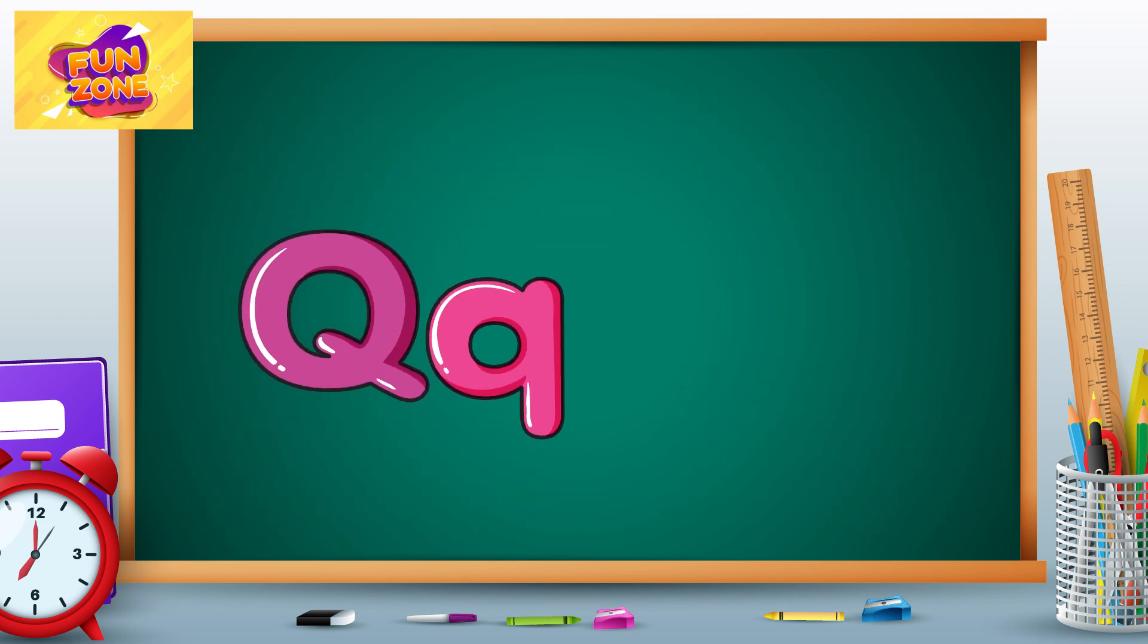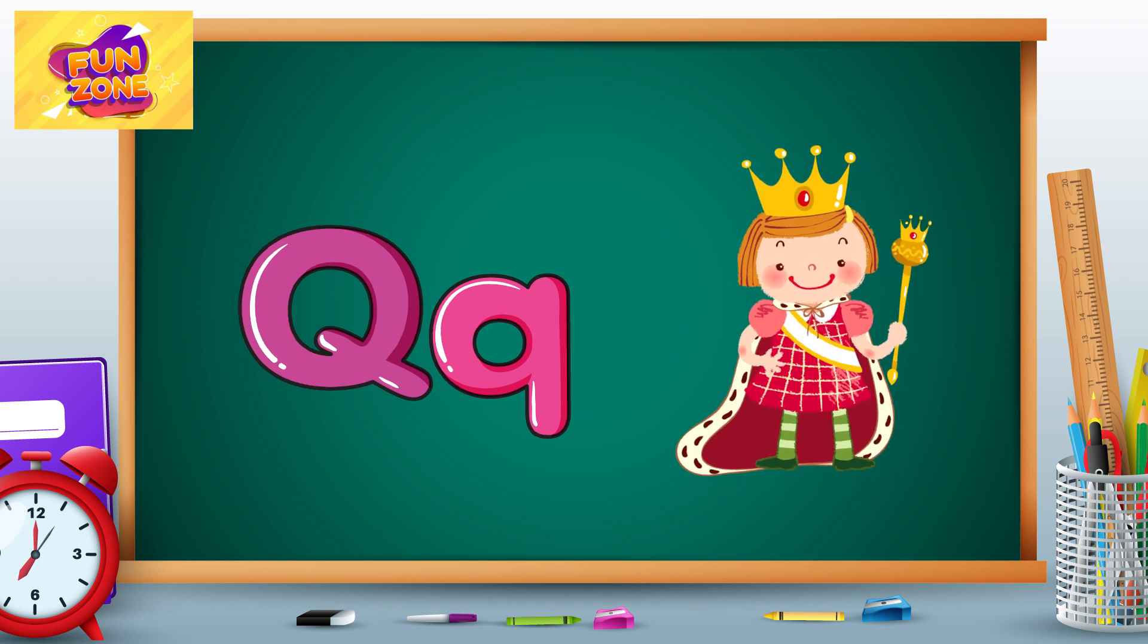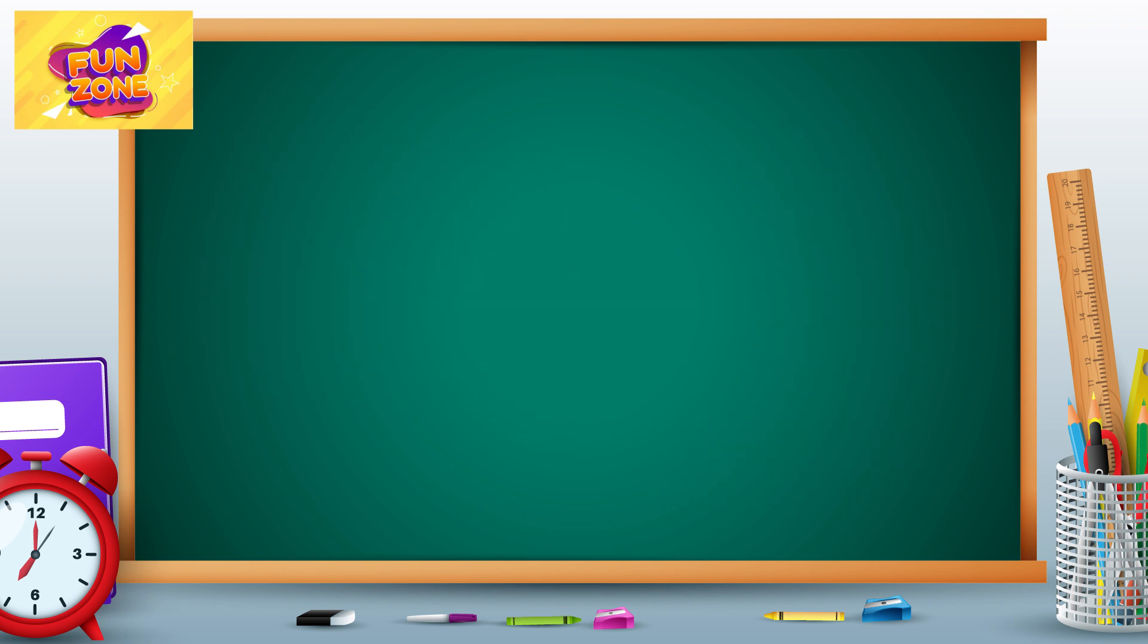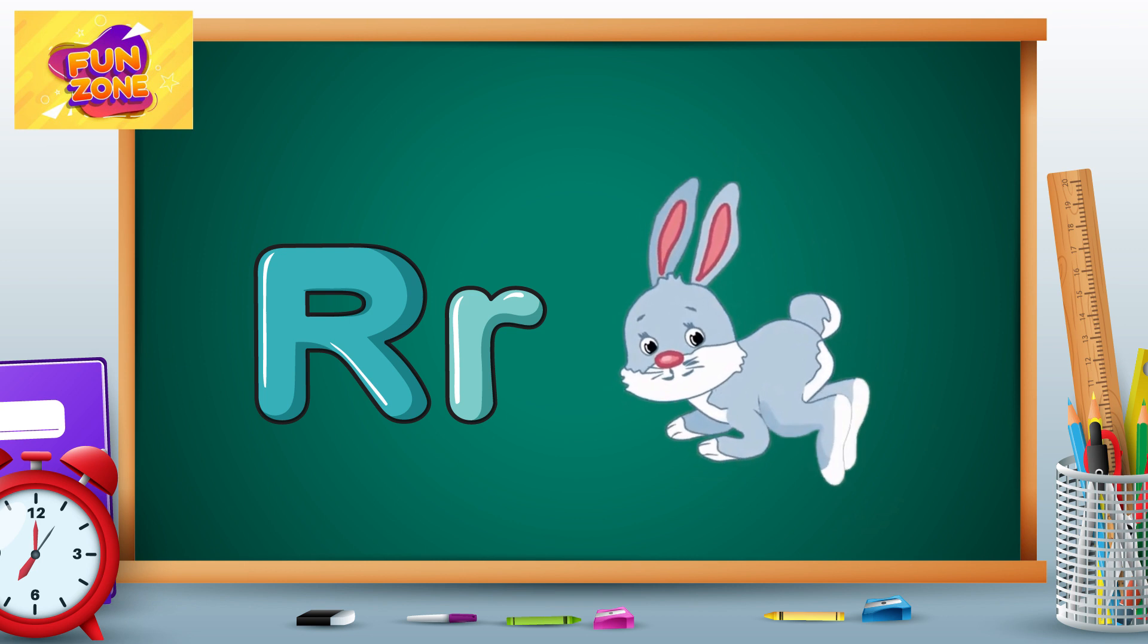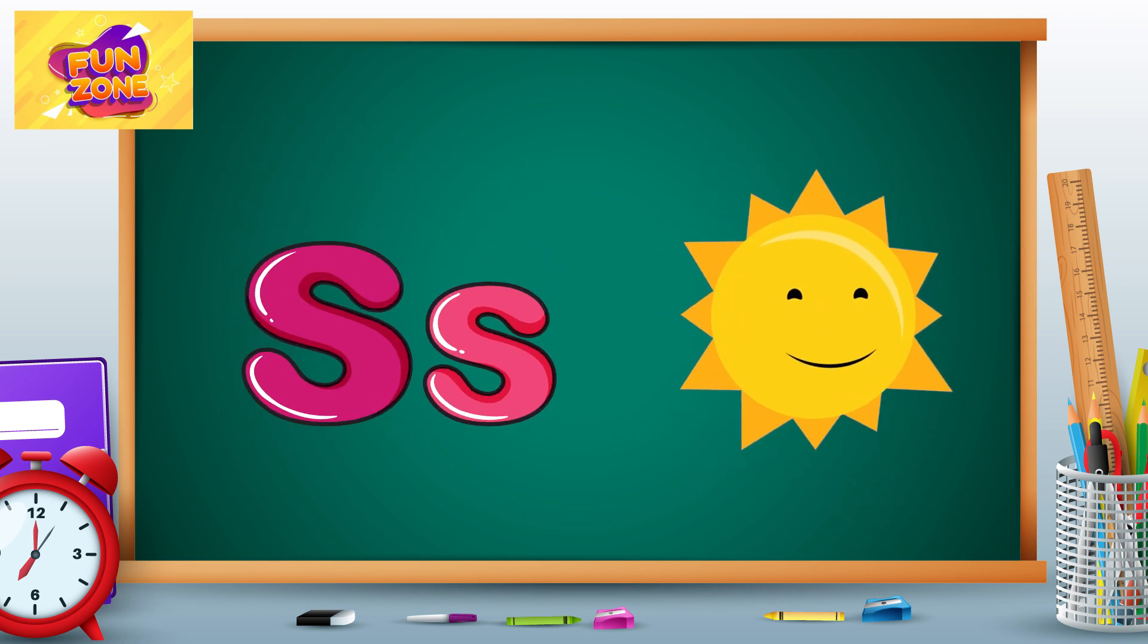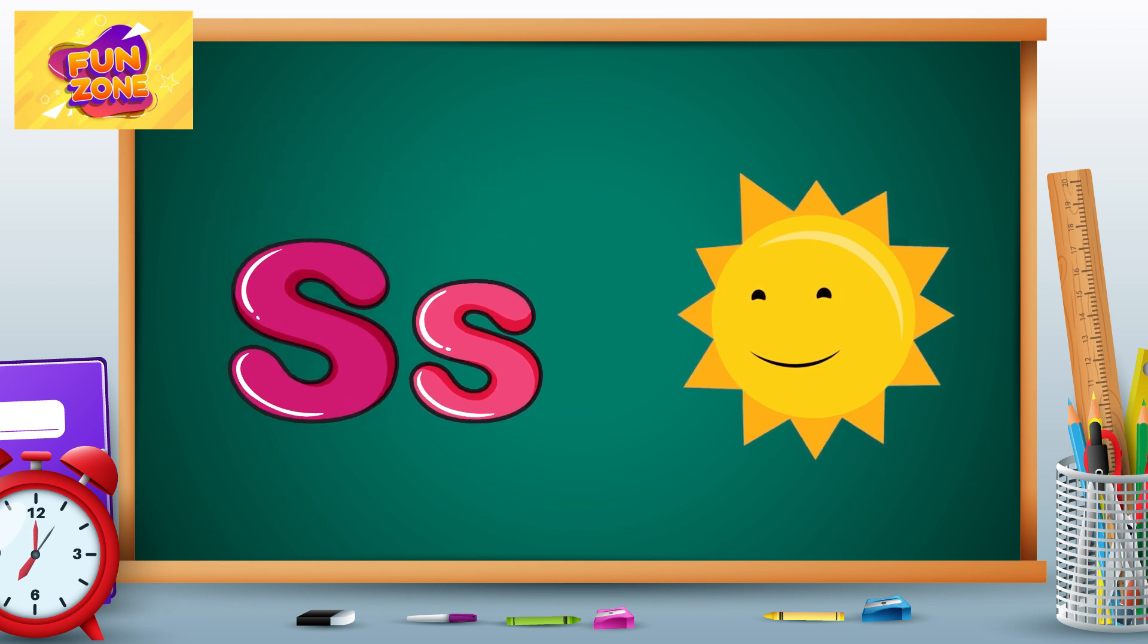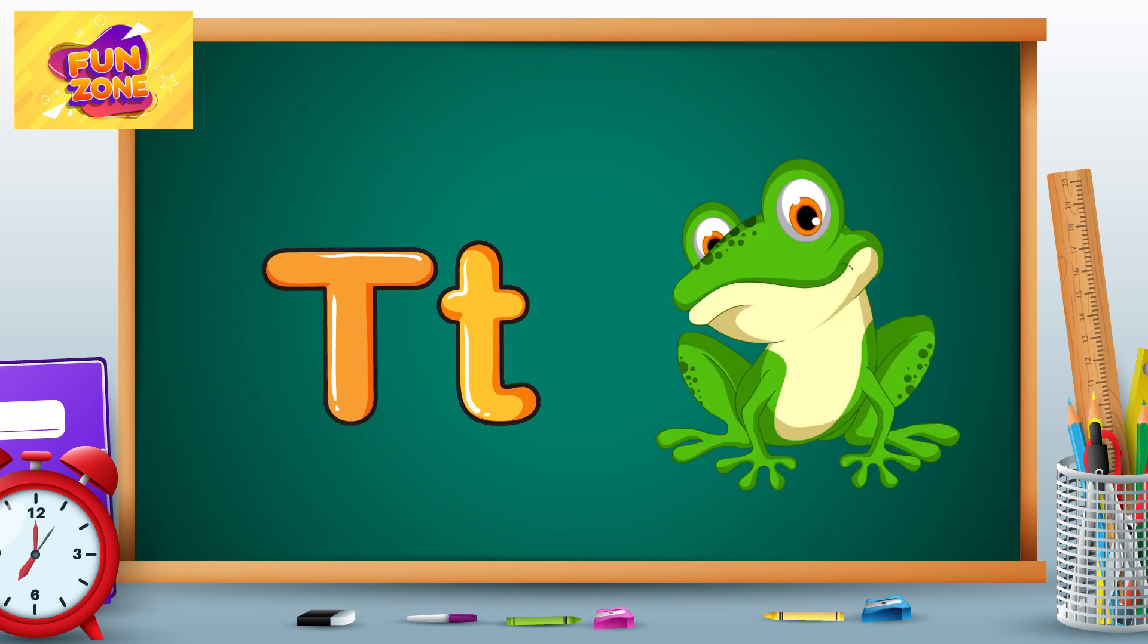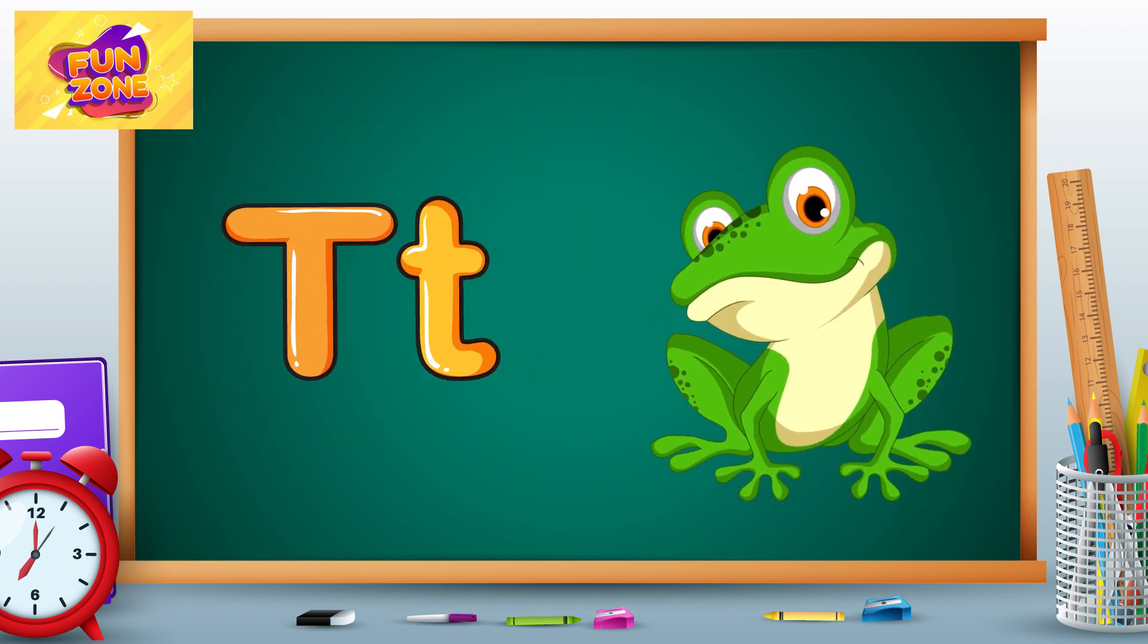Q is for queen, q-q-queen. R is for rabbit, r-r-rabbit. S is for sun, s-s-sun. T is for toad, t-t-toad.